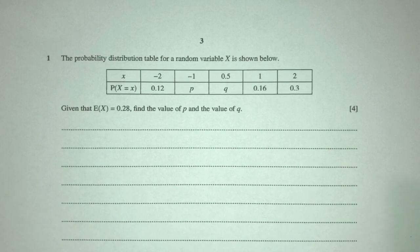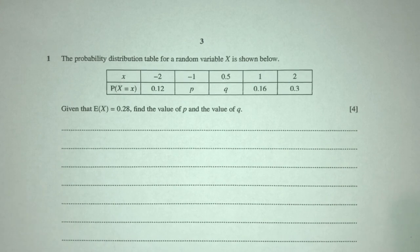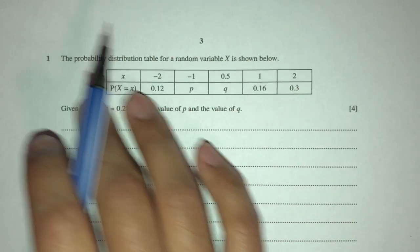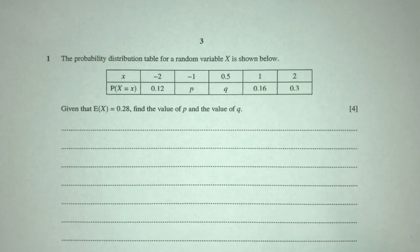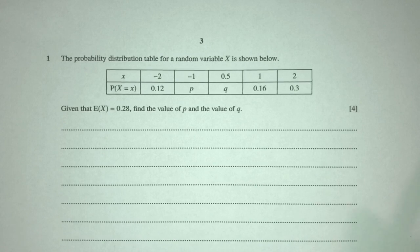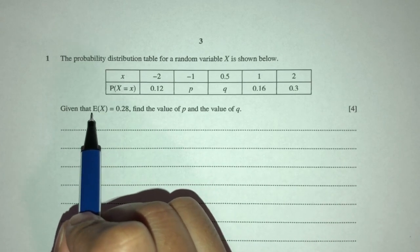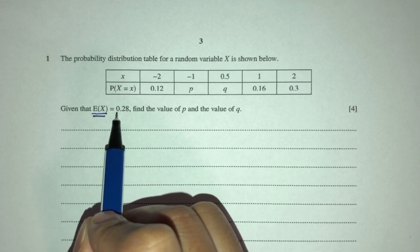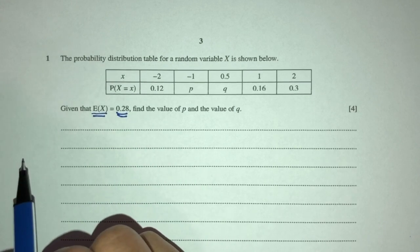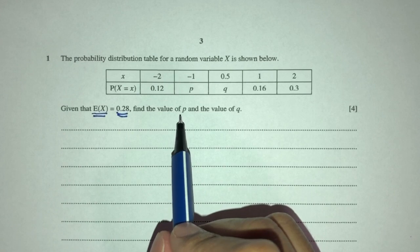Now, let's move on to question number one. Here we have a probability distribution table for a random variable X is shown below. So, we have this table right here. Obviously, we have to use the table to find your answers. Given that E of X, expectation of X, is equal to 0.28, we have to use that to find the values of P and Q.